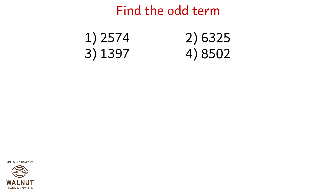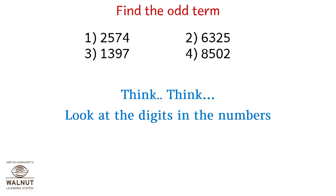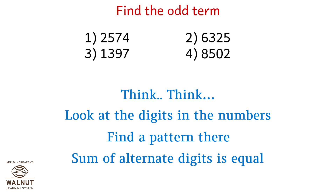Find the odd term. Look at the digits in the numbers and find a pattern. The sum of the alternate digits is equal. This one is tough! So which one is the odd one? It's option 4.